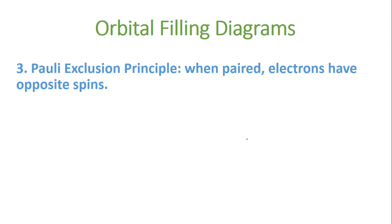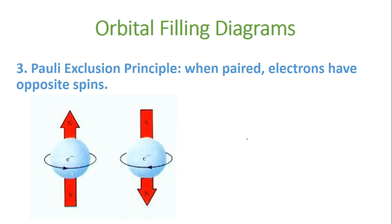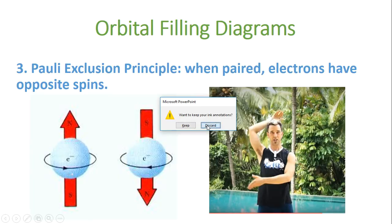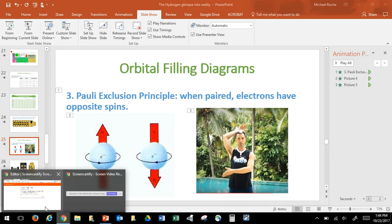The other rule is the Pauli Exclusion Principle: when paired, electrons have opposite spins. So that means if you're in the same orbital and one is going up, the other is going down. There's a great video of a guy who does something with his arms — basically, if he were the orbital and his arms were the electrons, they would be spinning in different directions.